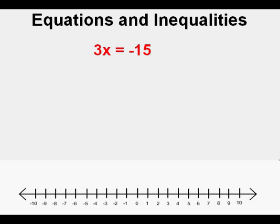Equations with a linear term and only one variable or unknown have one correct answer. In this case, the answer is x equals negative 5. We graph this answer on a number line with a single point.